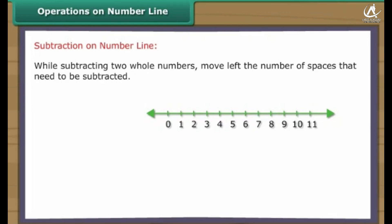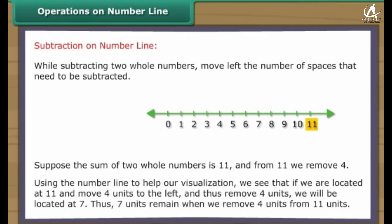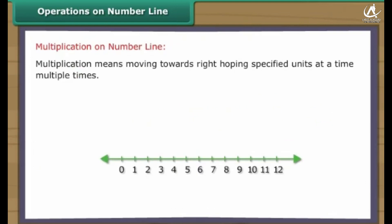While subtracting two whole numbers, move left the number of spaces that need to be subtracted. Suppose we start with eleven and remove four. Using the number line, if we are located at eleven and move four units to the left, we will be located at seven. Thus, seven units remain when we remove four units from eleven.